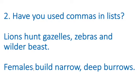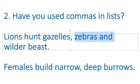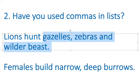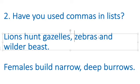Number two: have you used commas in lists? Let's look at my example. Lions hunt gazelles, comma, zebras and wildebeest. We don't have a comma before the 'and' here — just a comma between items. If you have three things, it goes between them.